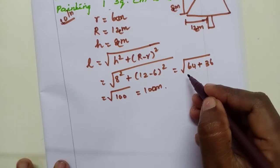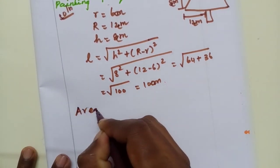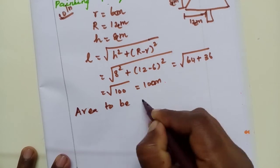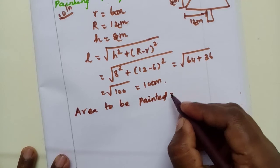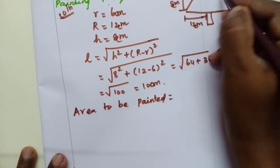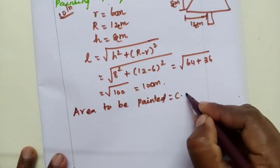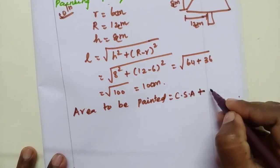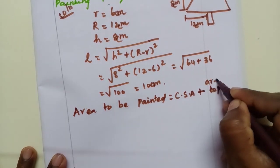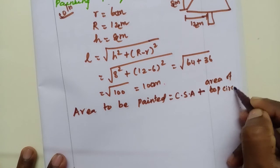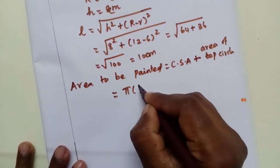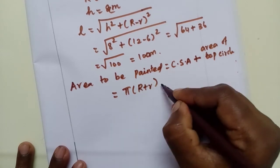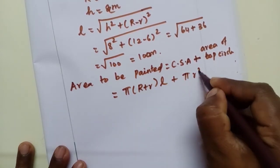The area to be painted is curved surface area of the frustum plus top circle. The curved surface area formula is pi into R plus r into L plus top circle formula pi r square.